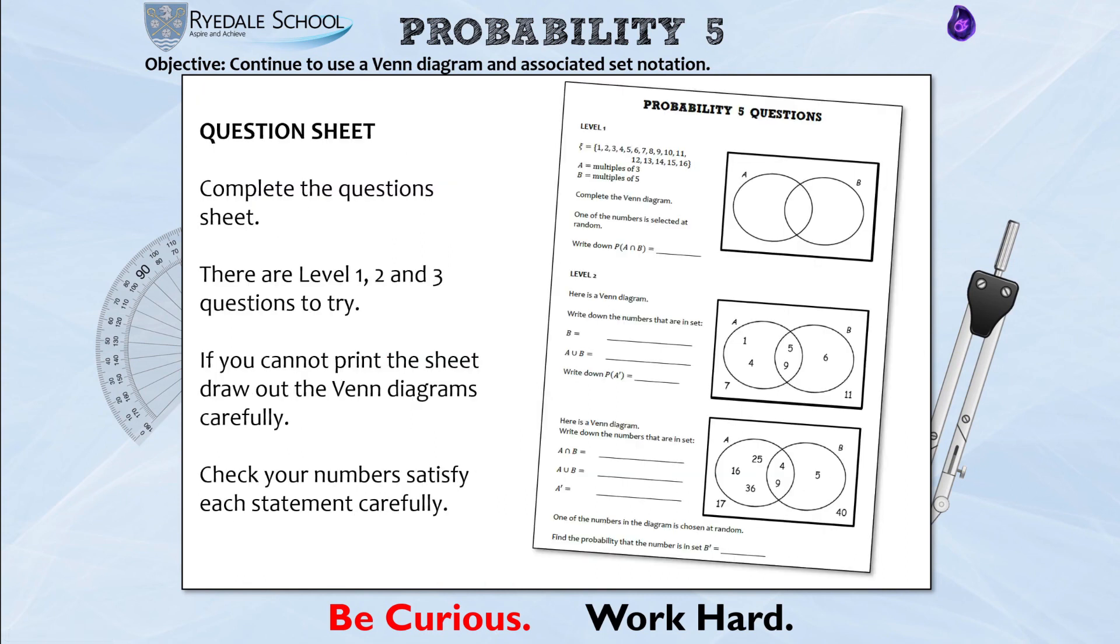Now just like last lesson there are some questions on the question sheet for you to try, split into level one, two and three. I haven't done a great deal of questions just in case you're one of those students that doesn't have access to a printer and so you're going to have to draw some of these Venn diagrams out. Pay attention, is it a question where I'm writing a list of numbers? If so write it with some curly brackets as a set. Or is it a question that has a P? Because remember if it's a question that has a P, it's asking you to work out a probability.